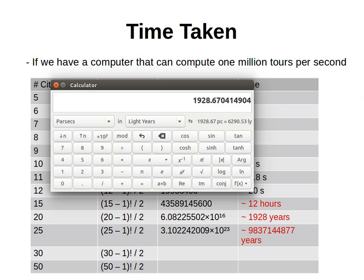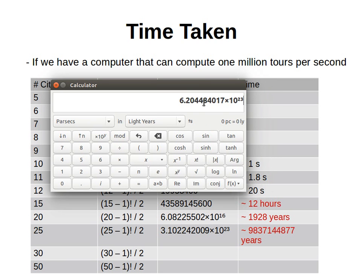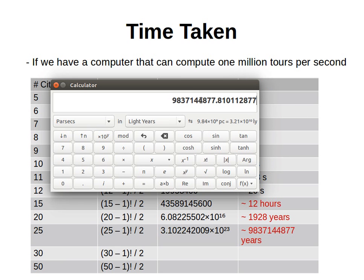Let's try n equals 25. 24 factorial divided by 2 is the number of possible tours. Dividing by 1 million gives seconds, by 60 gives minutes, by 60 gives hours, by 24 gives days, by 365 gives years. That comes out to 9 billion 837 million years — more than 9 billion years to go through all possible tours when the number of cities is just 25.